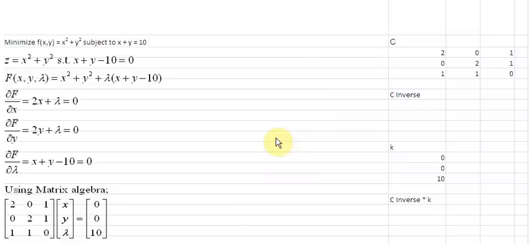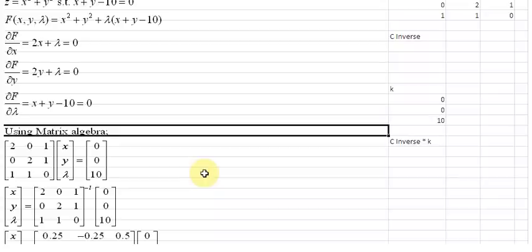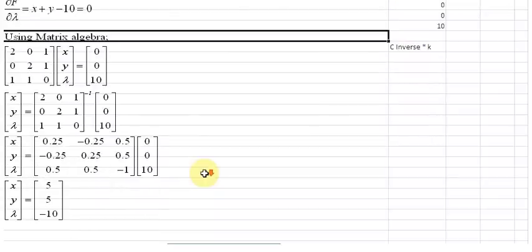Hello everyone. In an earlier video we took up this constrained minimization problem and used the Lagrangian multiplier method to solve it. This is the manual solution that we had set up, and just below if I drag down you will see the solution using matrix algebra. We are going to use Excel now to arrive at this solution.